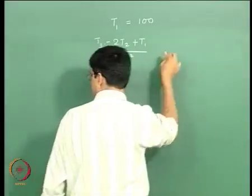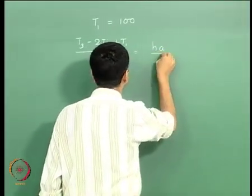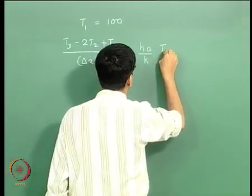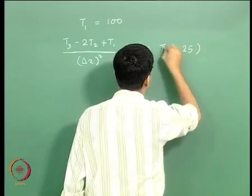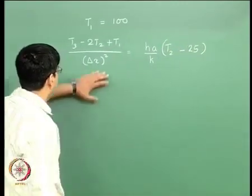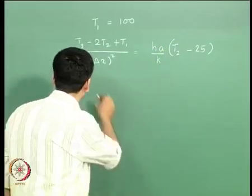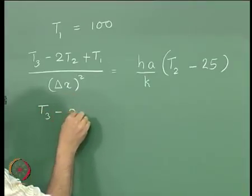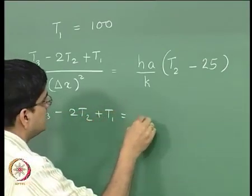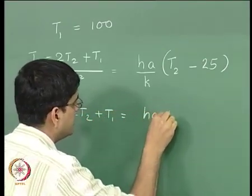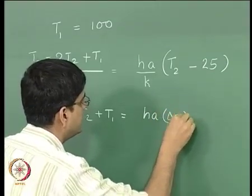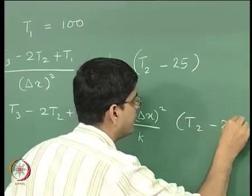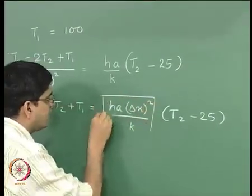Delta x squared gives us T₃ minus 2T₂ plus T₁ equal to (hA·Δx²/K)·(T₂ minus 25). Let us call hA·Δx²/K as alpha, and beta equal to 25·alpha.